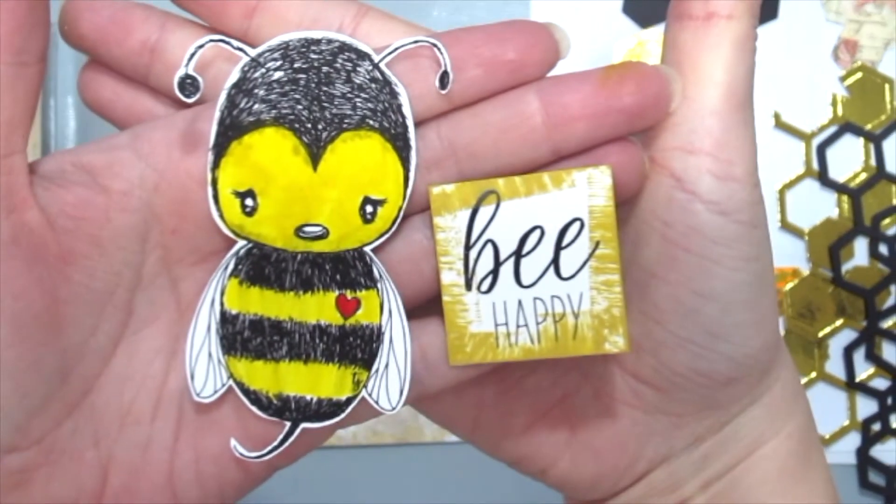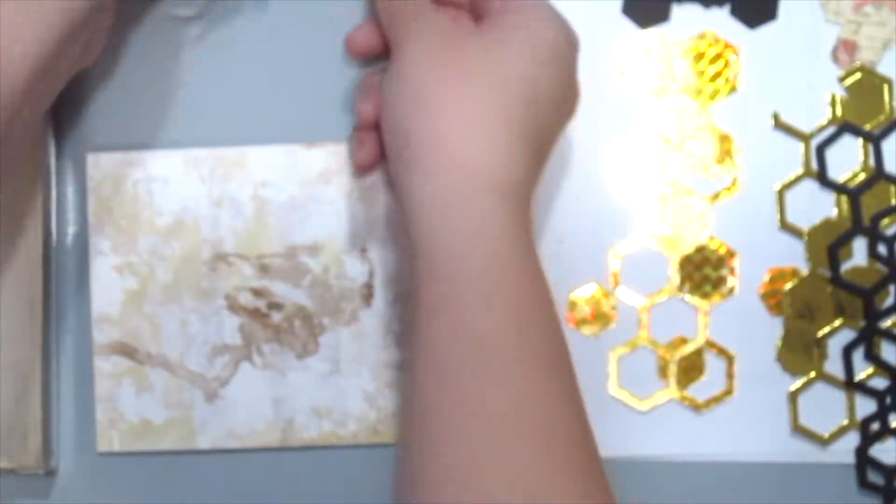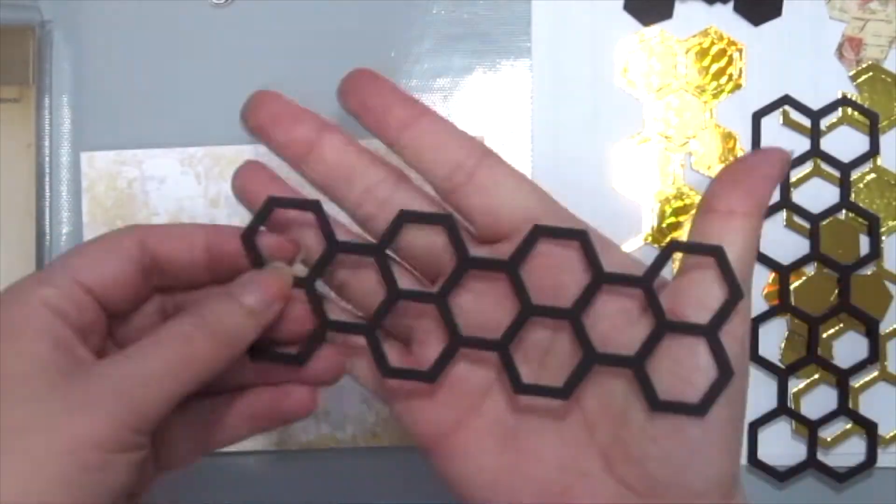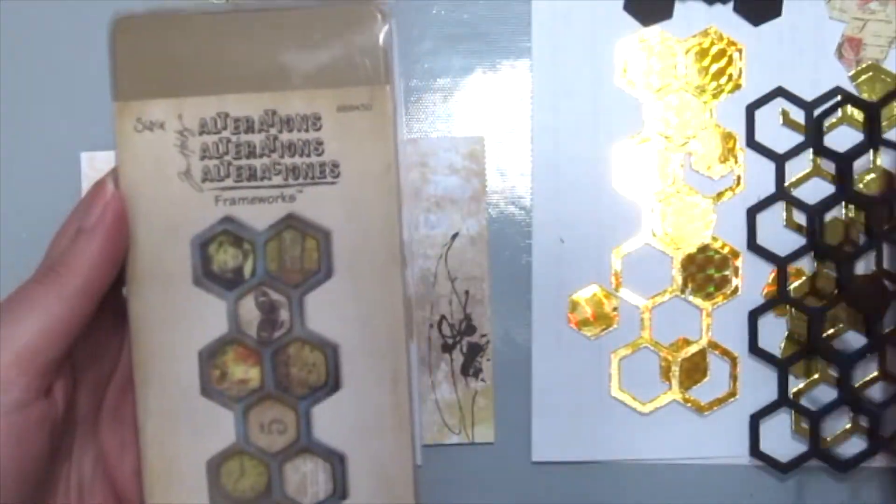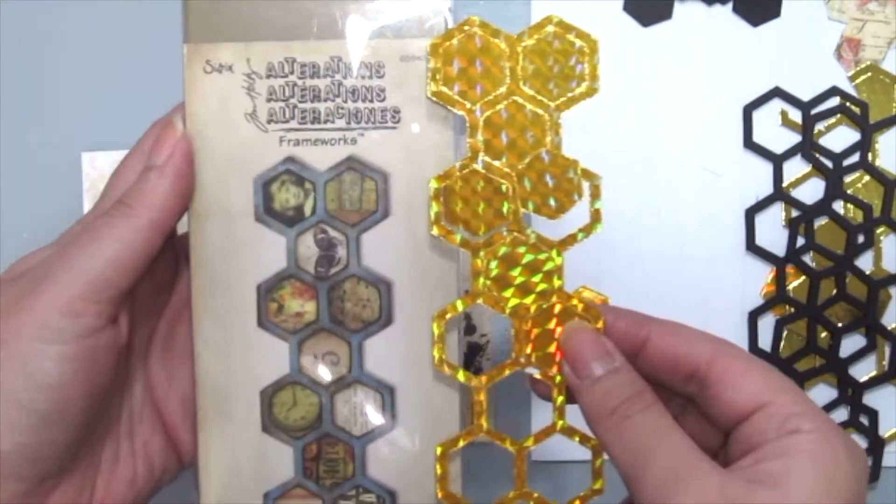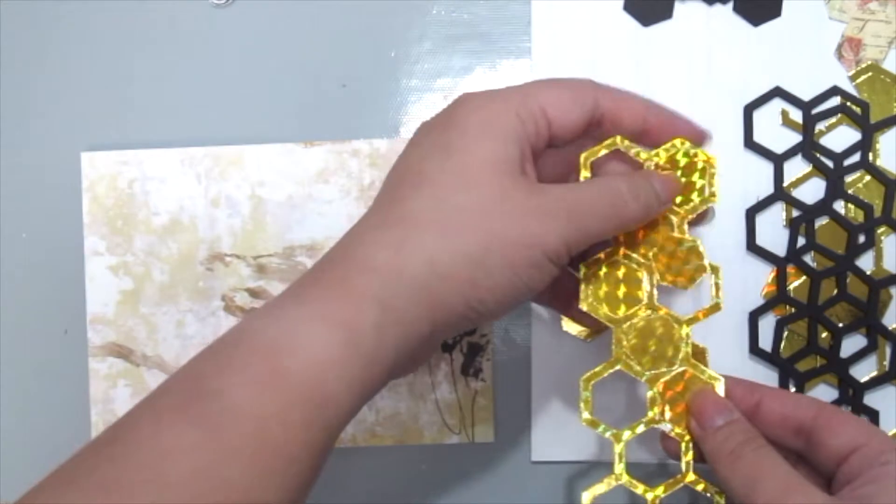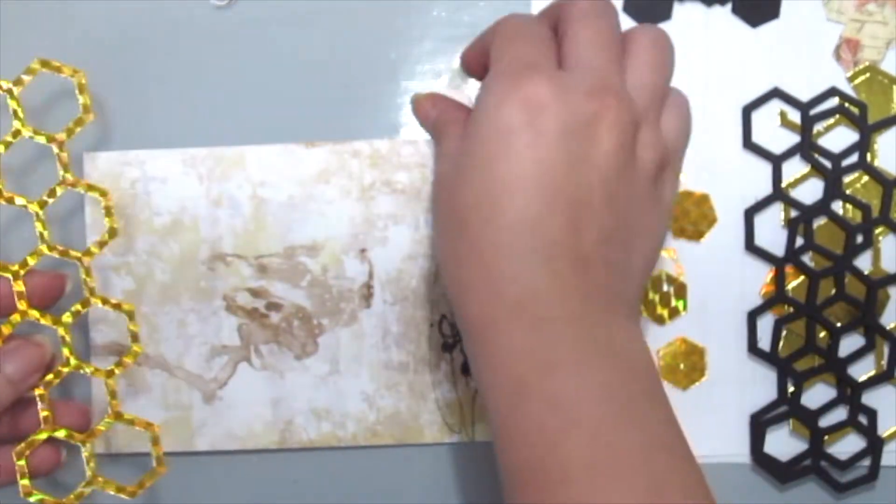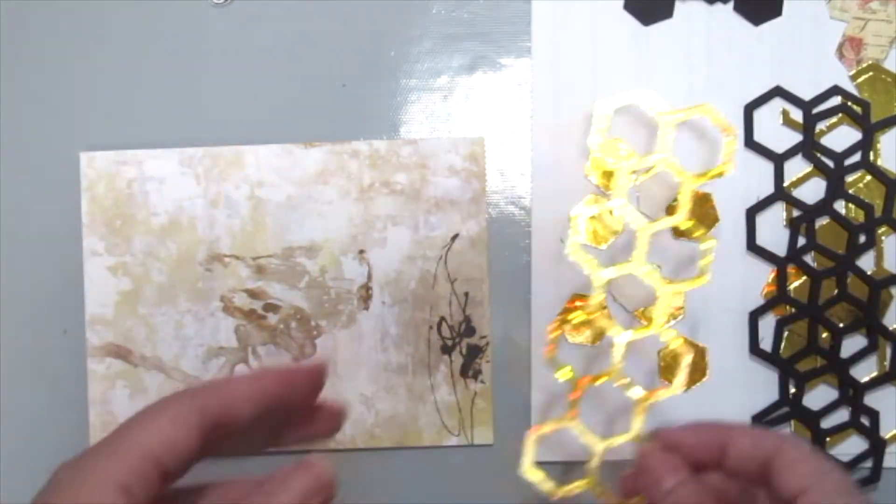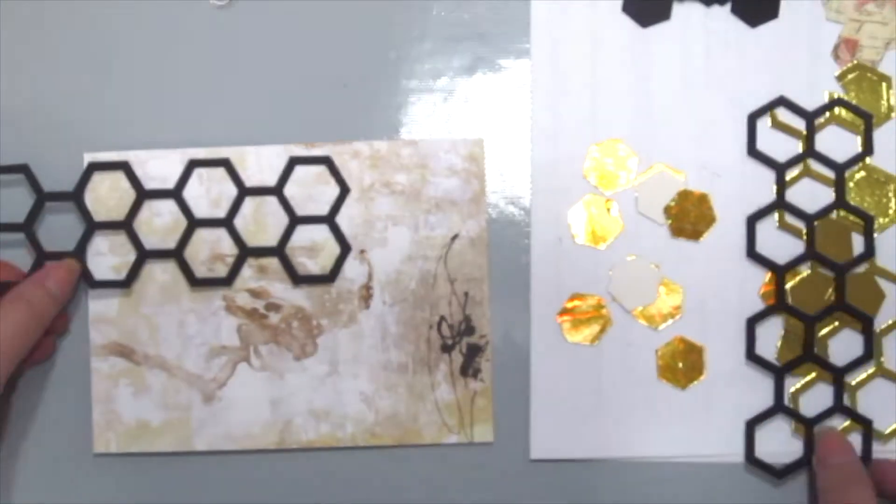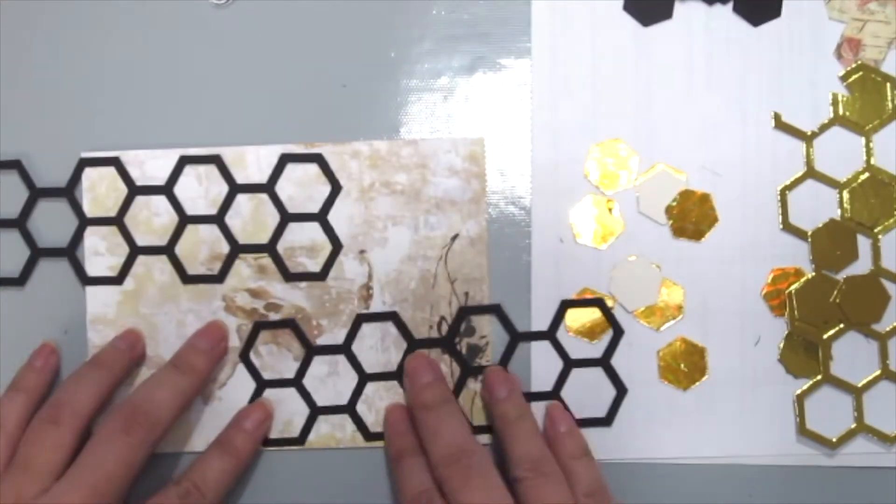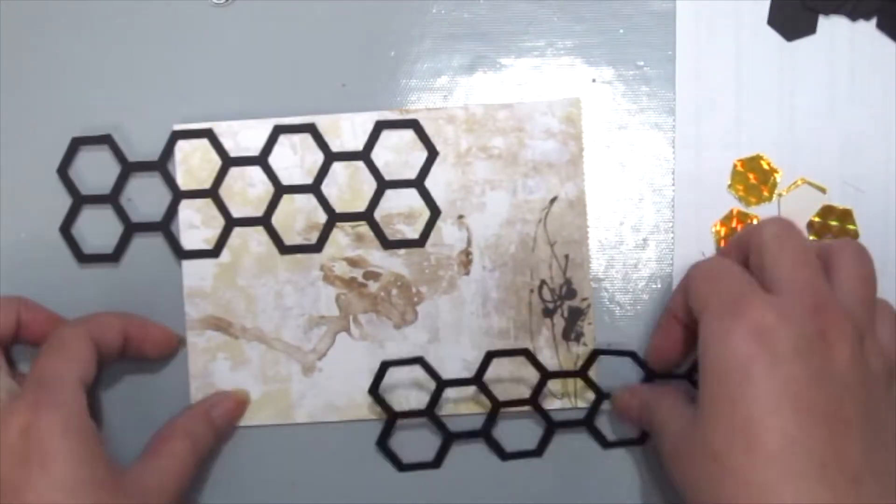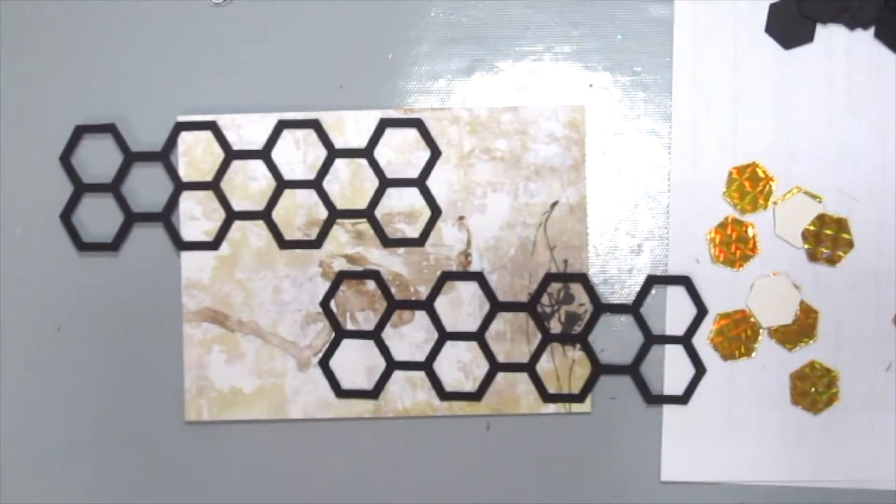I've already stamped and colored the bee and fussy cut it. Next, I'm going to create the honeycomb using the Sizzix Tim Holtz Alterations Frameworks die, which creates this beautiful honeycomb die with pop-ups. You could use this die to cut lots of stuff like felt, cardstock, or glass sheets, but here I'm using some holographic cardstock and pattern paper.